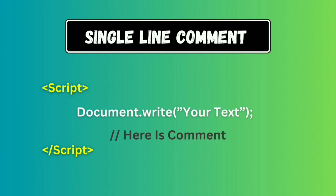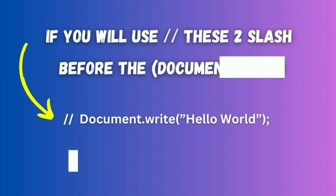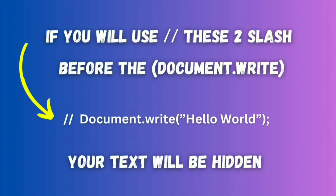Just look at my screen. There is a line written 'document.write your text' and after two slashes here is the comment. So a comment will be written after the two slashes. When you write anything after two slashes, that line is considered as a comment and is ignored by the JavaScript interpreter and won't show in the document. When you put these two slashes before the document.write, your whole text will be hidden.